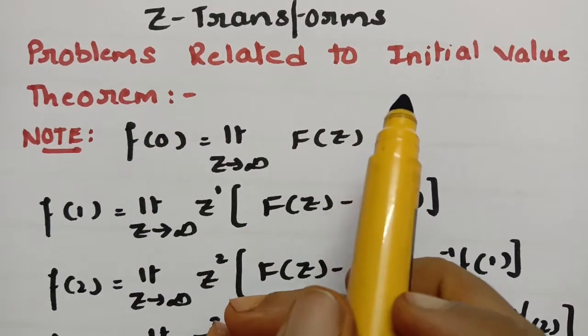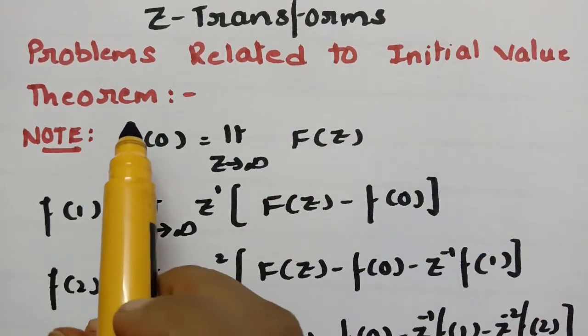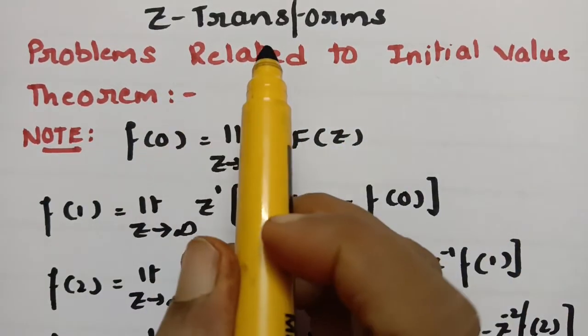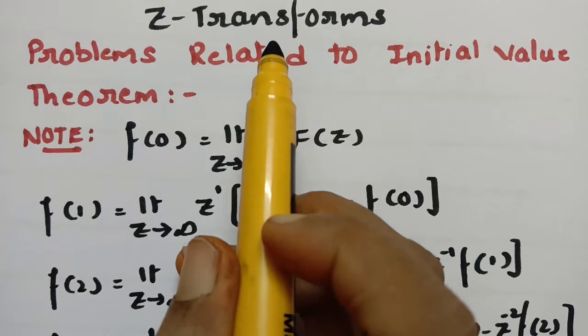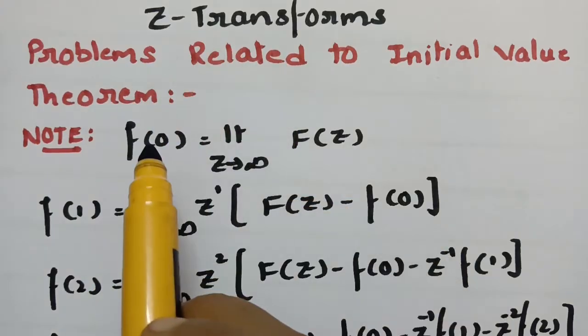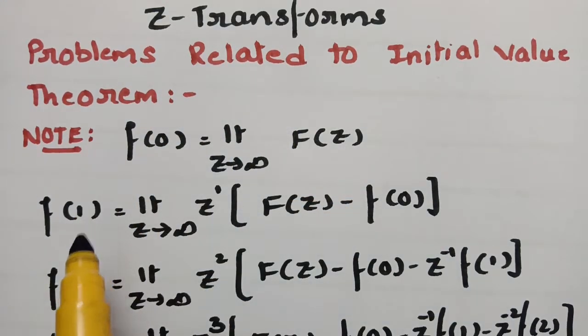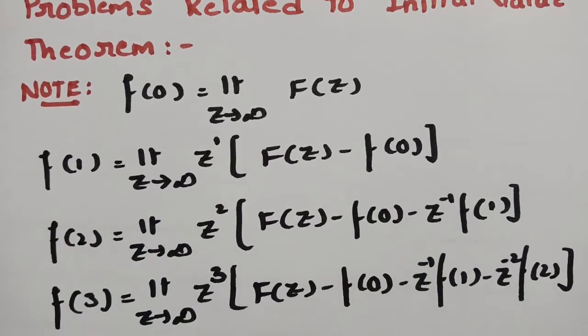Today's video is based on problems related to the initial value theorem, a topic from Z transforms. We need to find the values of f(0), f(1), f(2), and f(3).